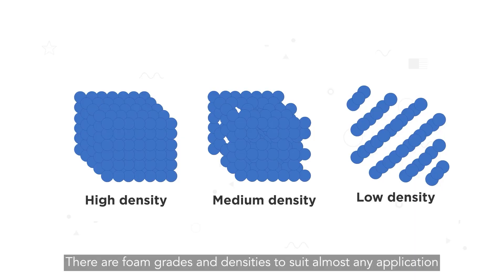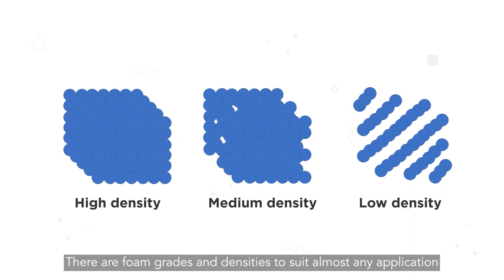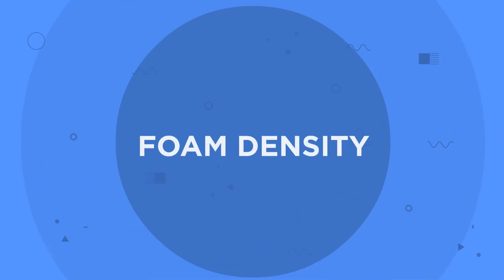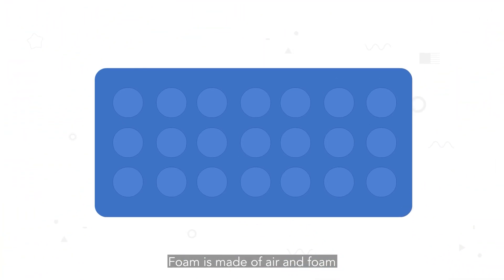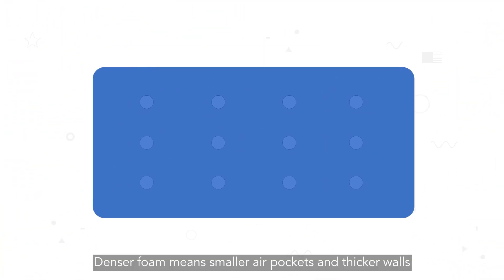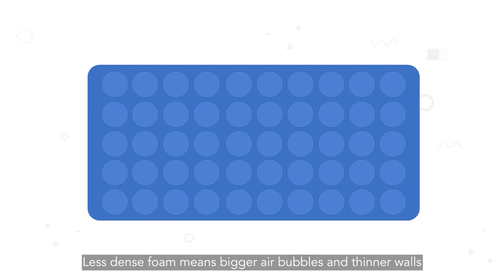There are foam grades and densities to suit almost any application. Foam density: foam is made up of air and foam. Denser foam means smaller air pockets and thicker walls. Less dense foam means bigger air bubbles and thinner walls.